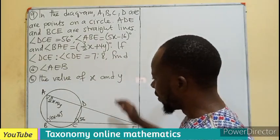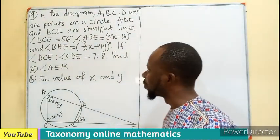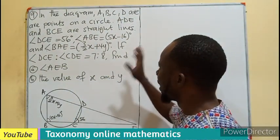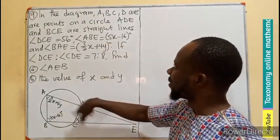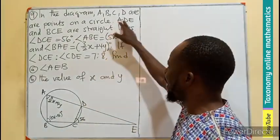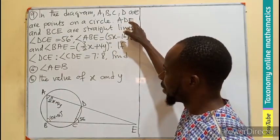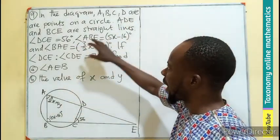We have to solve this under cyclic theorem. In the diagram, A, B, C, D are points on the circle. Then ADE and BCE are straight lines.